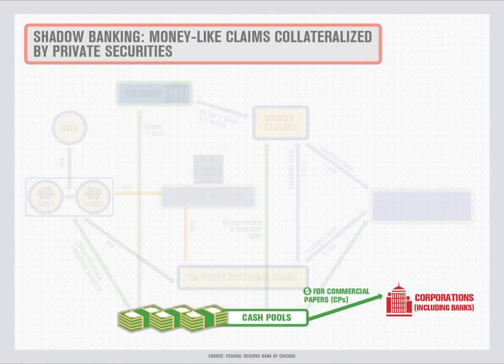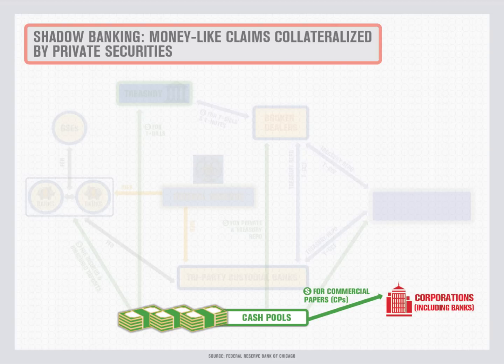Even after transforming government-guaranteed longer-term bonds into overnight instruments via repo, there still may not be enough safe investments to meet the demand of cash pools. Some investors turn to other short-term securities that may not be as safe. One prominent example is commercial paper — a money market security issued by corporations to obtain funds to meet short-term obligations, offering a higher return because it is backed only by the corporation's promise to pay the face amount at maturity.